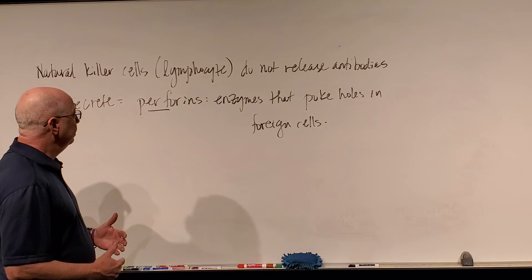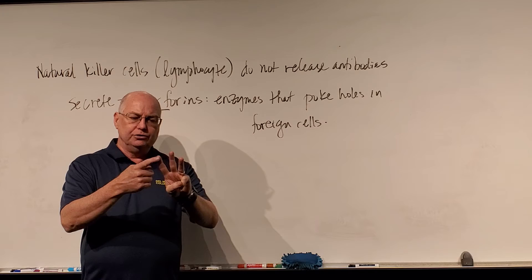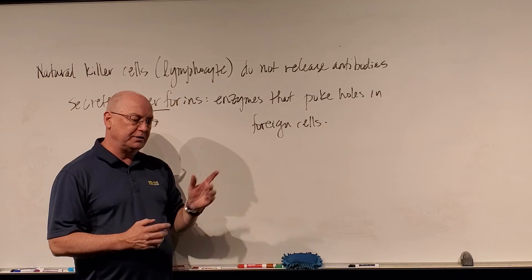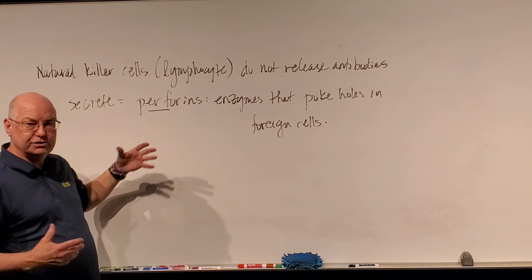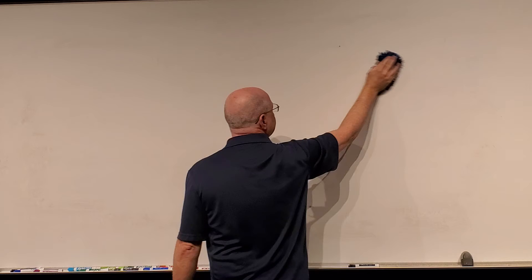So your innate immune system — your second line of defense — involves five cells: three granulocytes (neutrophils, eosinophils, and basophils), monocytes, and natural killer cells, which are a type of lymphocyte. What's unique about NK cells is that they do not release antibodies — they release compounds called perforins which kill or lyse open foreign invaders. They are not phagocytic — they do not phagocytose foreign cells.